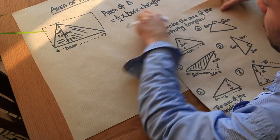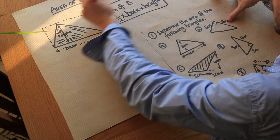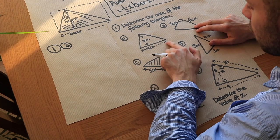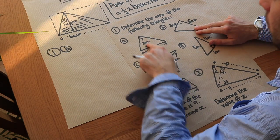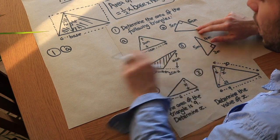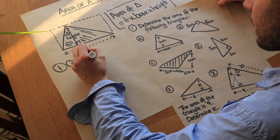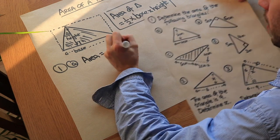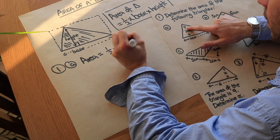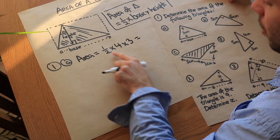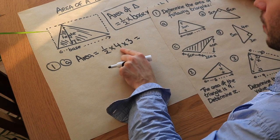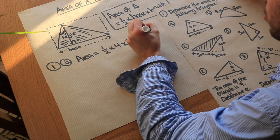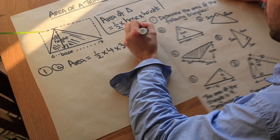Let's use that formula to solve some problems. We're going to find the area of the following triangles. The first has a base of 4 and a perpendicular height of 3. So the area is half times 4 times 3. Half times 4 is 2, and 2 times 3 is 6. So the area is 6 centimetres squared.